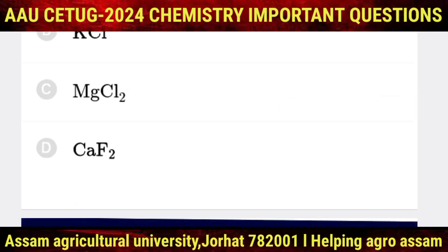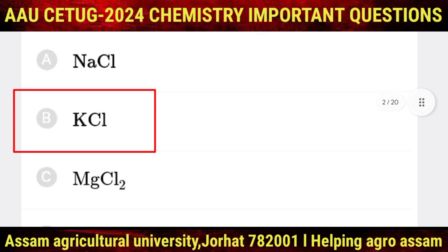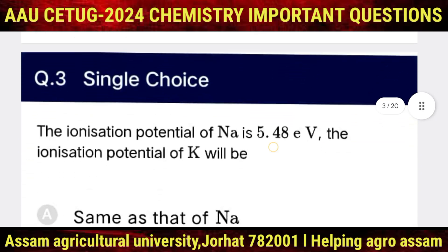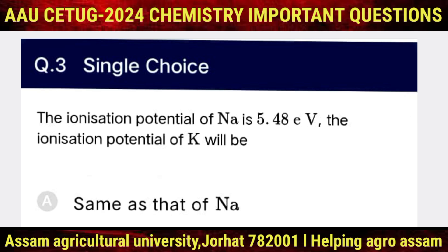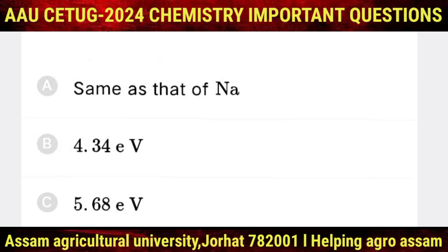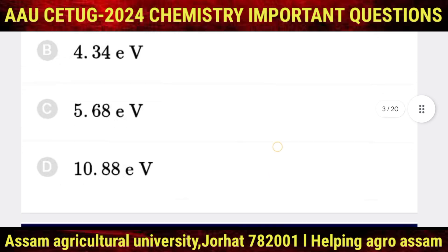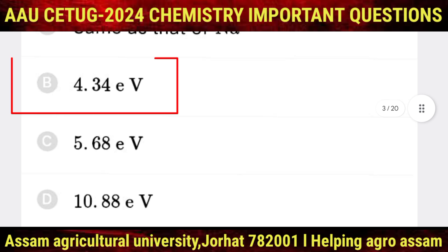The next question is: the ionization potential of sodium is 5.48 electron volts. The ionization potential of potassium will be — options are: same as sodium, 4.34 electron volts, 5.68 electron volts, and 10.88 electron volts. The correct option is 4.34 electron volts.